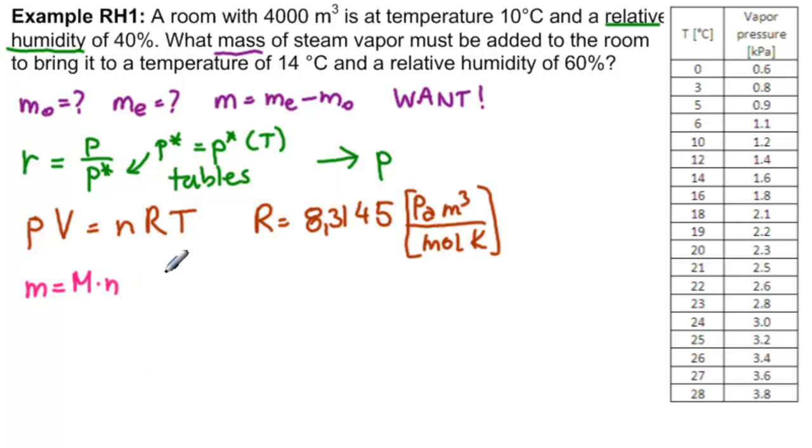And n will be what we calculate here. So what do we have? We have m equals the molar mass of water times n. Then n is PV over RT. And we have that equals the molar mass of water. And P is equal to how much? R times P vapor pressure times the volume over RT. So we can calculate this for both of our times, the beginning time and the end time.